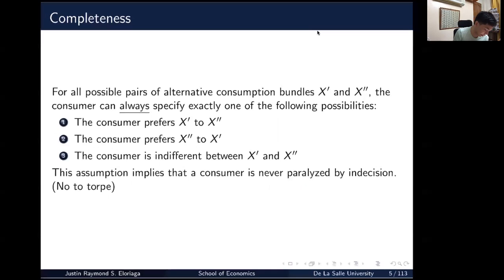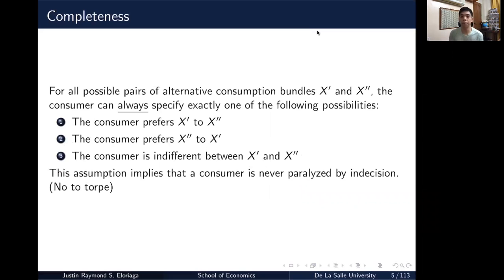Just to recall, it means that for all possible pairs of alternative consumption bundles, say you were faced with X prime or X double prime, the consumer can always specify one of the following possibilities: the consumer prefers X prime to X double prime, the consumer prefers X double prime to X prime, or the consumer is indifferent between X prime and X double prime. The consumer can always give an answer, either prefer one over two, prefer two over one, or be indifferent between the two, which means you're not plagued by indecision. You are never paralyzed by indecision.